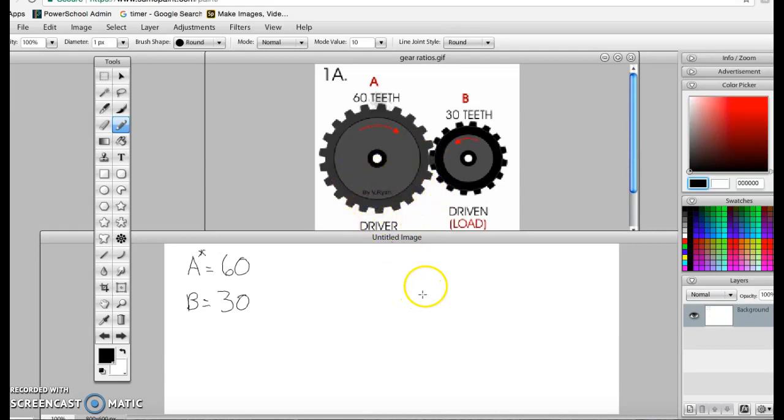we want to determine if this is going to be a speed reduction with a torque increase or a speed increase with a torque reduction. So S is for speed, down is for reduction.